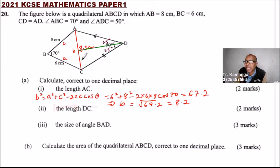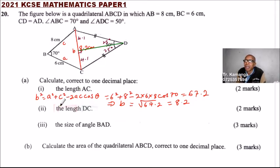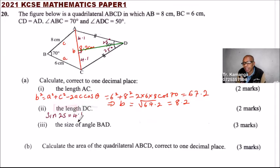This side becomes 4.1 and this is 4.1 — we divide 8.2 by 2. We can use trig ratios. This angle is 90 degrees, so we say the sine of 25 equals the opposite, which is 4.1, divided by the hypotenuse, which is DC.